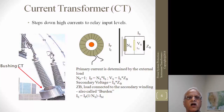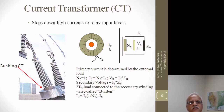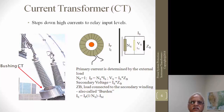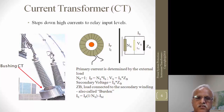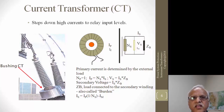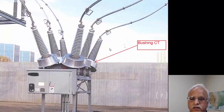If you short the secondary of a CT, it just balances the ampere turns and no voltage develops — it provides a path for secondary current to flow. If you open-circuit it, the primary current keeps flowing and the CT tries to push current through an open circuit, producing very high voltages on the secondary side. The CT saturates and gets damaged. So: on a voltage transformer you cannot short the secondary; on a current transformer you cannot leave it open.